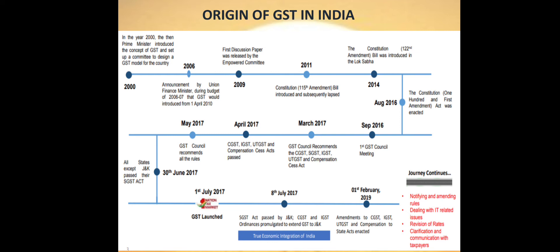The 115th Amendment Bill was not accepted. Again in the year 2014, the Constitution's 122nd Amendment Bill was introduced in Lok Sabha, considering all the recommendations and suggestions given by all the states and all stakeholders. On 19th December 2014, the then NDA government tabled the 122nd Amendment Bill on GST in Lok Sabha. It was discussed over the parliament in Lok Sabha and finally on 6th May 2016, this bill was passed in Lok Sabha.